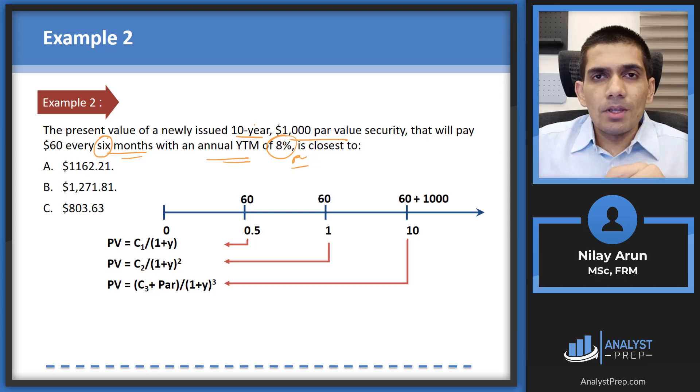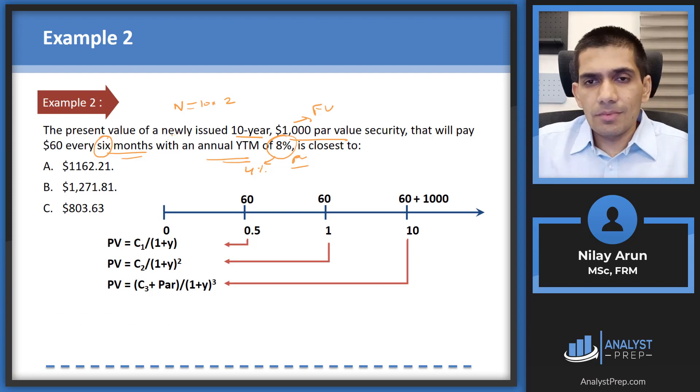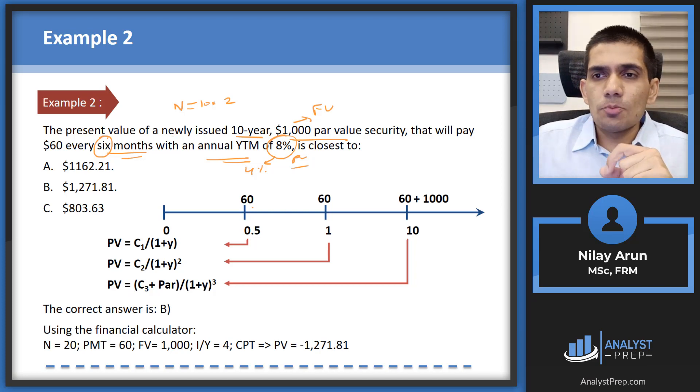It's a 10 year bond. Now 10 year if it was paying on an annual basis then we would have taken N as 10. But this is paying every six months which means N ends up being 10 into 2 which is 20. Thousand dollar is the par value. So this is your future value. It's going to pay every six months with an annual YTM of 8%. Now 8% is per year. For six months what would it be? That becomes 4%. So that is 4%. That's what we're looking at. Now based on this we need to calculate the present value of the bond. How do we calculate? It's paying you 60 dollars periodically. So 60 becomes your PMT. That's your coupon. 60 plus thousand that's your future value. That's your par value which you're going to get.